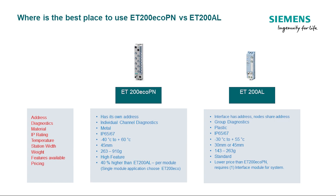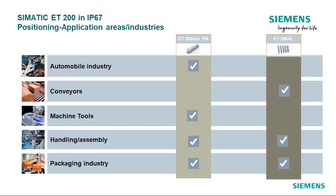Each product is built to meet the requirements of specific applications. The ET200EcoPN is very rugged, built with a metal housing, has high-feature diagnostics, and a wide temperature range. It is built for tough environments and weighs a lot more than the ET200AL. It was designed for tough applications such as machine tool, automotive industry, and other applications that can best benefit from its construction.